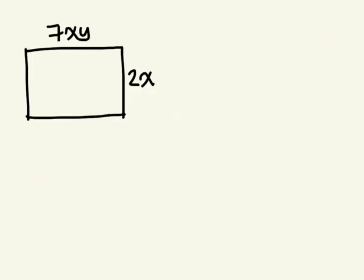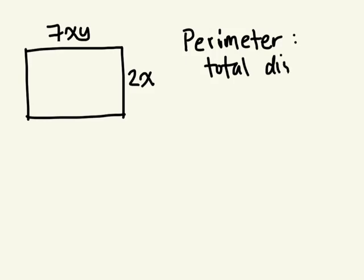So the question's asking you to find a simplified expression of the perimeter. What's important here is that they state the word simplified. What does it mean to find the perimeter? What is the perimeter of a shape? Perimeter is the total distance around the outside of the shape, on the outside.